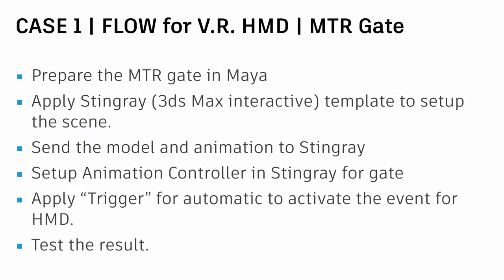So let's go for case one and the MTL gates. We will prepare a model of the gates in Maya and also prepare the Stingray scene with the VR template. Then we send the model, texture, and animation to Stingray with a different approach. We will use the animation control to set the gate animation with some event triggers. Then we will apply a trigger node to automatically detect the HMD device to activate the events, and then test the results.